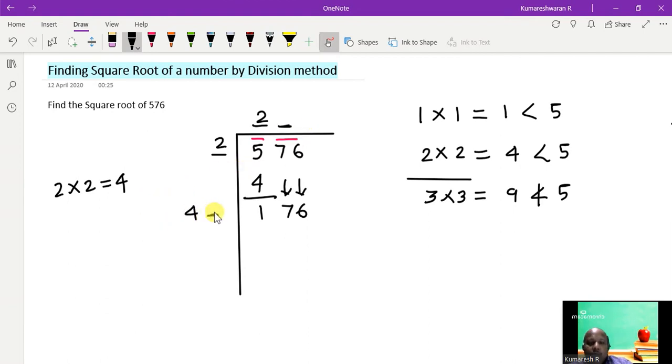So now I need to think of a digit so that I put the number here, I put the same number here, such that the product of these two numbers is less than or equal to 176.